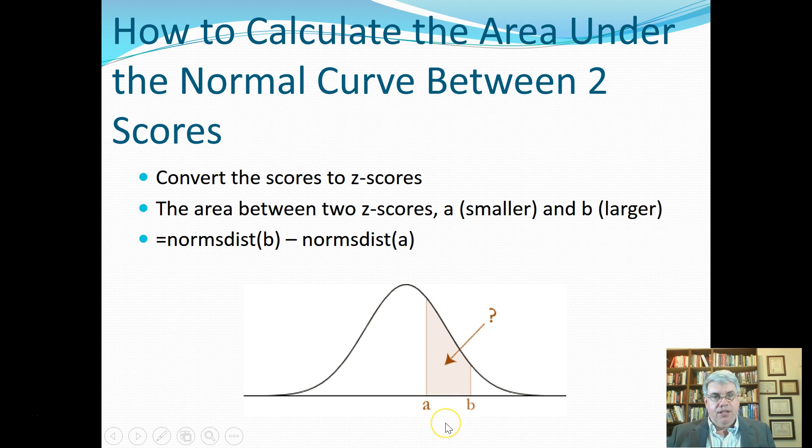What we're going to do is we're going to convert the scores to z-scores. And then we're going to look at the area between the two z-scores, A and B, which is going to be, we're going to use the Excel command normsdist.